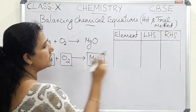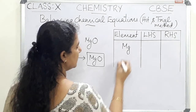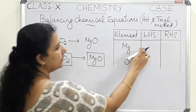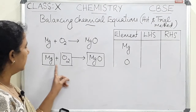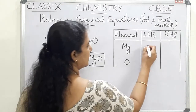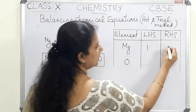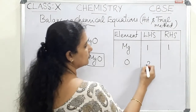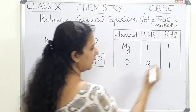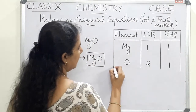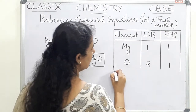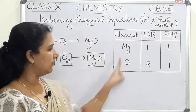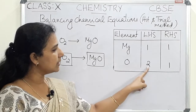The elements in this equation are magnesium and oxygen. In the LHS, magnesium has one atom, and in the RHS there is also one atom. For oxygen, there are two atoms in the LHS but only one atom in the RHS. So there is an imbalance in the case of oxygen, and we need to balance this equation.